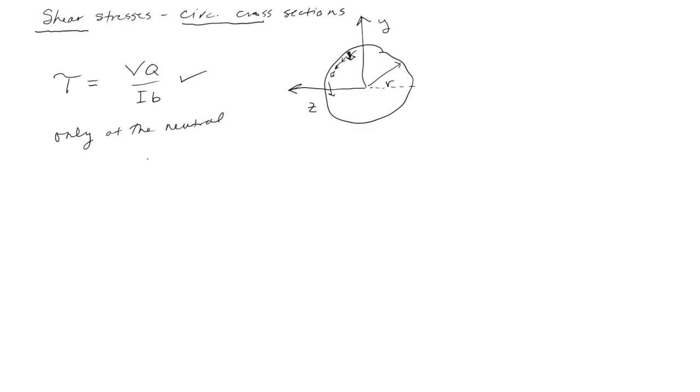And so for circular cross sections, you can apply this formula only at the neutral axis. So that's the key takeaway, only at the neutral axis. And that's quite nice actually because the maximum shear stress, so the max tau, is in fact at the neutral axis as well. So even though you can't look at the shear stresses in other parts of the cross section, you can still get a feel for the maximum shear stresses using the equation that we derived for rectangular cross sections.